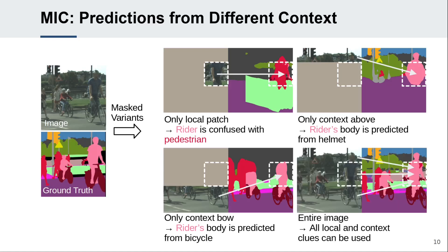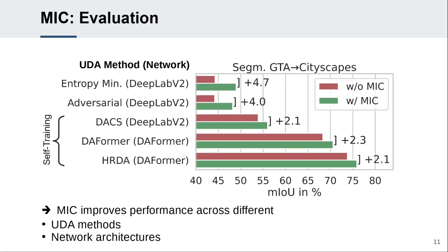When provided with a complete image, MIC can utilize different local and context clues for robust segmentation. Due to its simple and universal concept, MIC can be easily integrated into different UDA methods and network architectures.